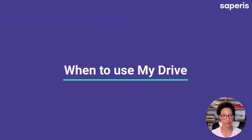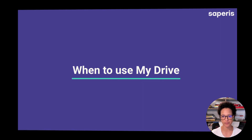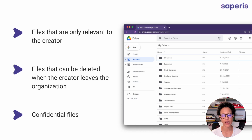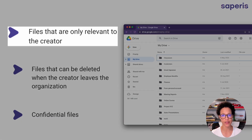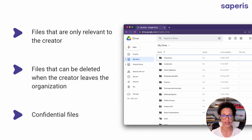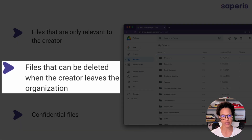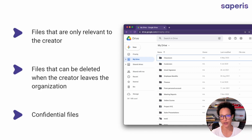When should you use My Drive instead of a shared drive? Files that are only relevant to you — like your personal meeting notes, your ideas, or information you don't want to share with colleagues — belong on your My Drive. The same goes for files that can be deleted once you leave, or maybe a draft of a project that you share with one or two colleagues but it's okay if it's gone when you are.